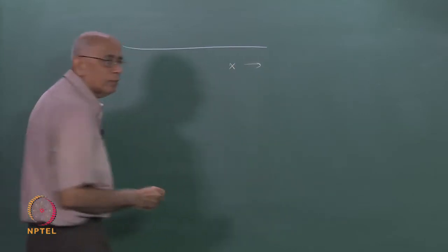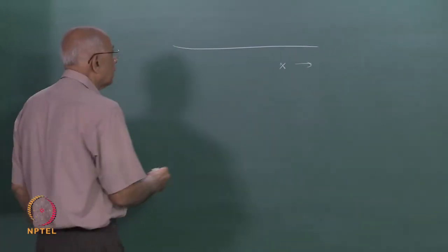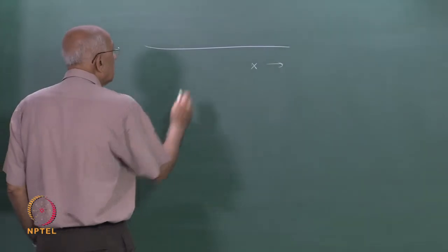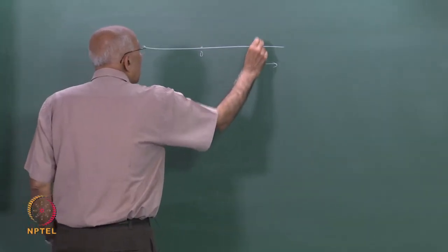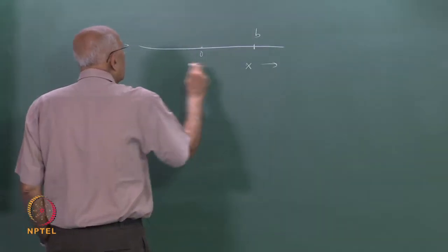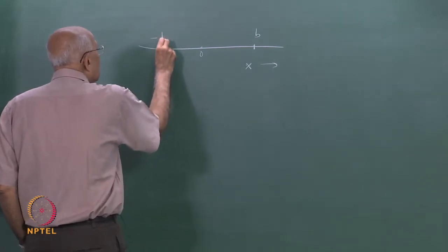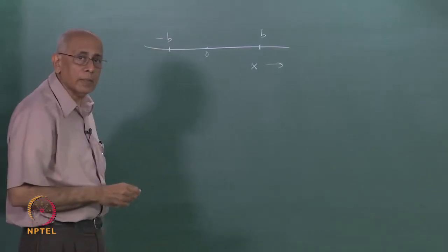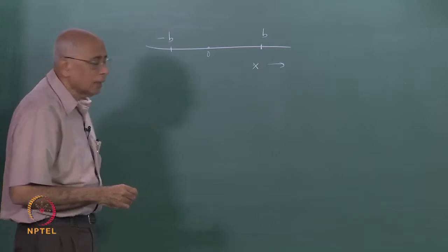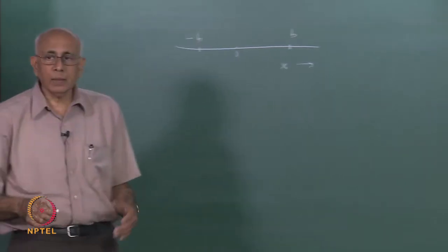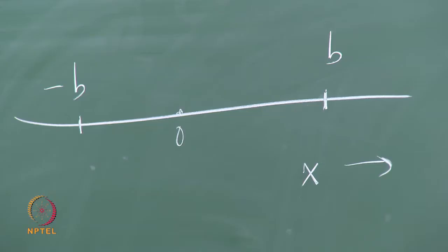On the x-axis you have a diffusing particle satisfying the ordinary diffusion equation. Here is the origin, and there is a barrier at the point b and another at minus b, symmetrically placed on either side. This barrier is either reflecting or absorbing.